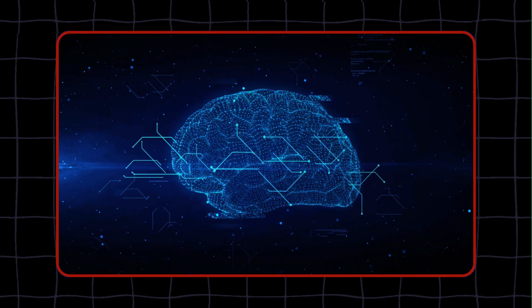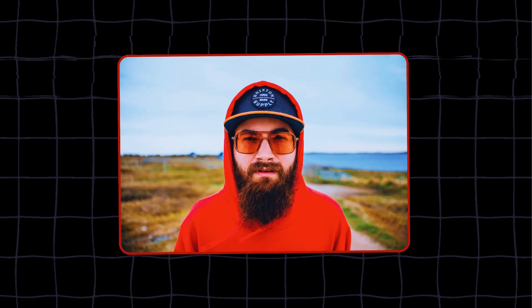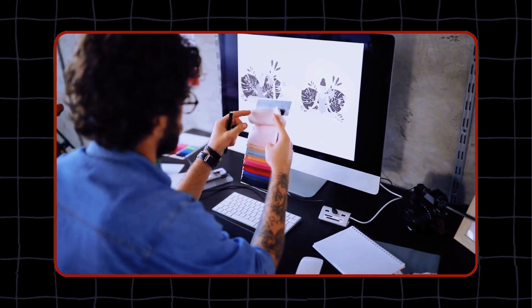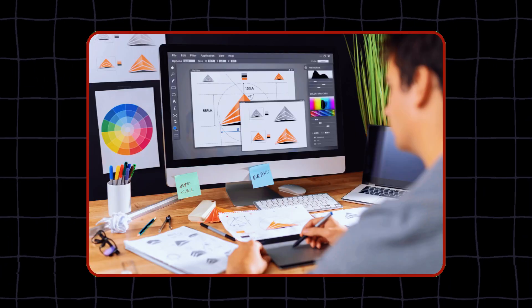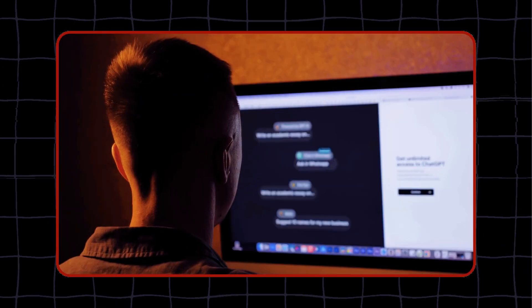One of the coolest features of 4M is its ability to create images from text descriptions. You can unleash your imagination and creativity, and 4M will bring it to life in a matter of seconds. For example, if you type in a portrait of myself with a beard and sunglasses, 4M will create an image of you with a beard and sunglasses. You don't need to be a graphic designer to create amazing images. You just need 4M and your imagination. This is a game changer for anyone who works with visual content, like graphic designers, marketers, and content creators. You can save time, money, and effort, and still produce stunning results.